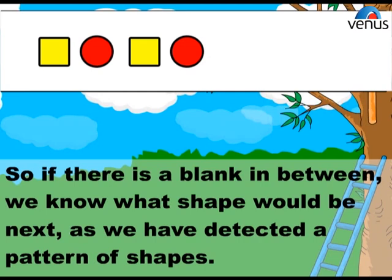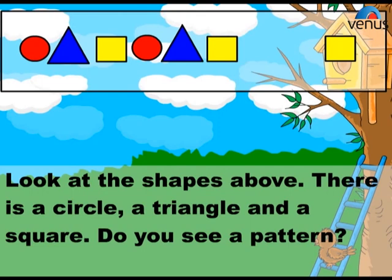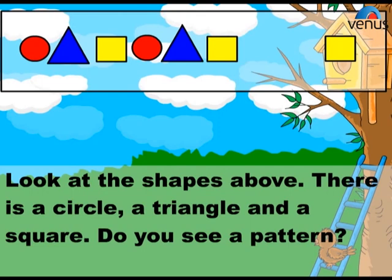As we have detected a pattern of shapes, take another example. Look at the shapes above. There is a circle, a triangle, and a square. Do you see a pattern? Once we have recognized the pattern, then the missing shapes can be easily identified and drawn in the blanks.